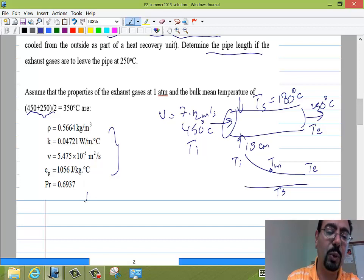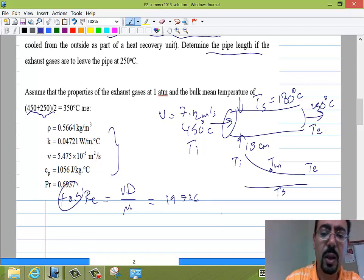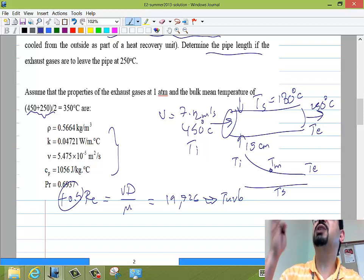So now we will go for the Reynolds to tell whether it's laminar or turbulent. So the Reynolds is VD over nu. And this Reynolds number is 19,726. So calculating Reynolds number is worth 0.5 points. So 19,000, that is laminar or turbulent? Turbulent. Because laminar finished at 2,300 and above 10,000 that's fully turbulent. So we are turbulent.